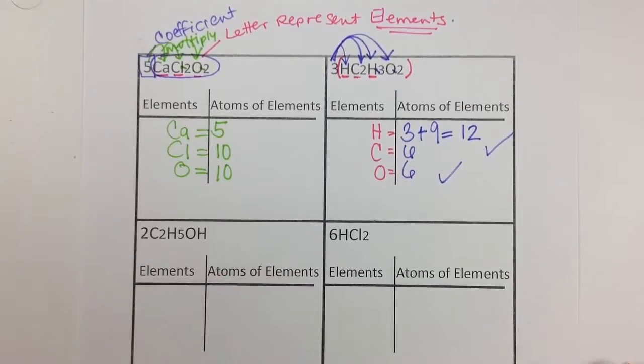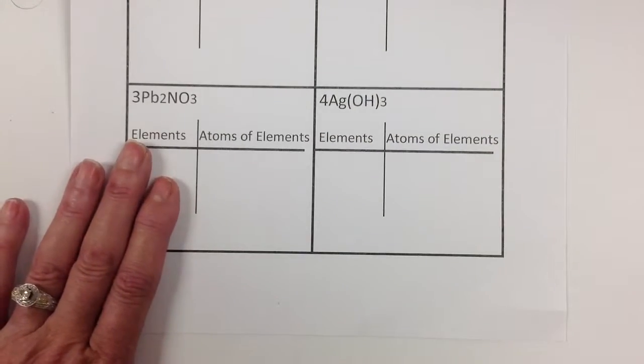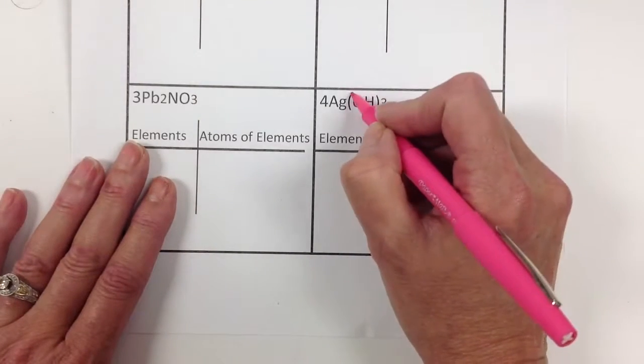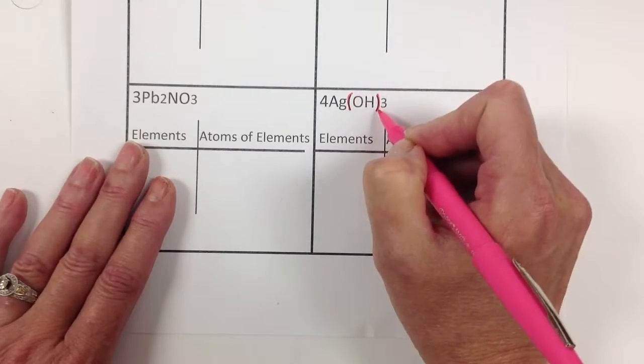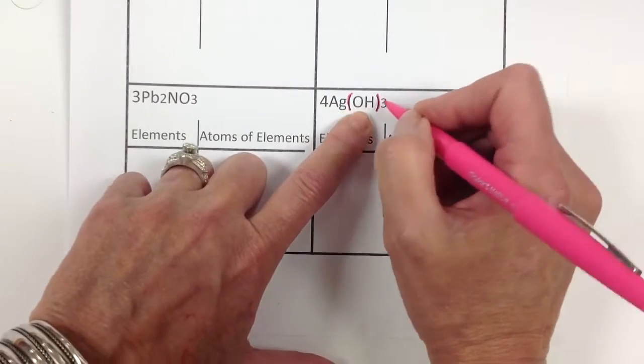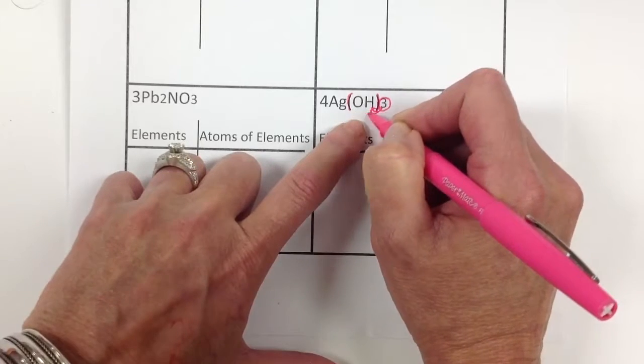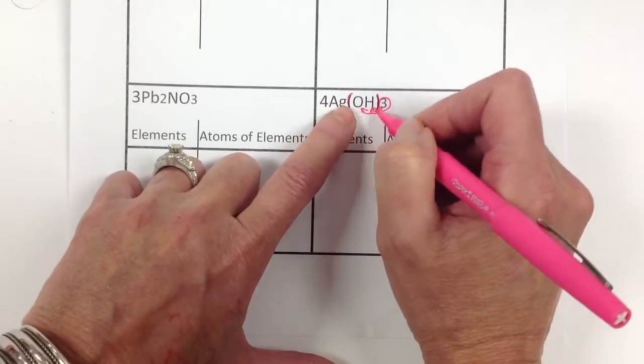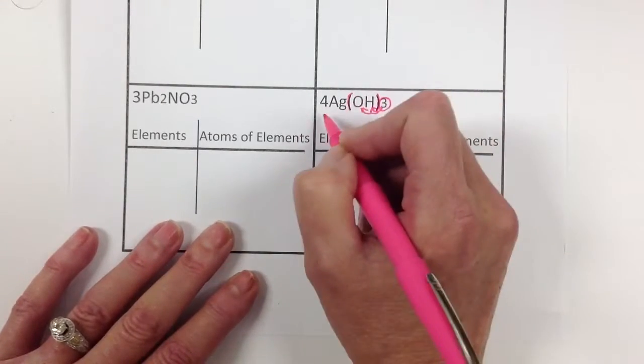Alright, let's try one more. I'd like to try this one down here. Here we have a subscript outside the parentheses. You know, for math, anytime you see parentheses, you need to do this first, mathematically speaking. So we're going to get rid of these parentheses first. This essentially tells us that we're going to have three times this. Even though it's a subscript, it applies to both the O and the H within the parentheses.